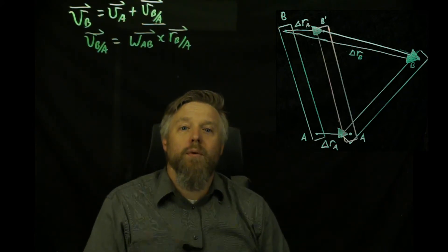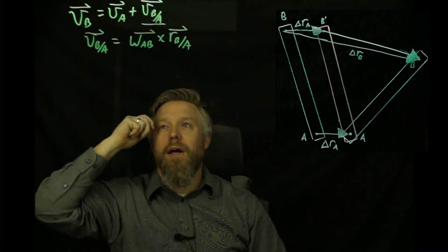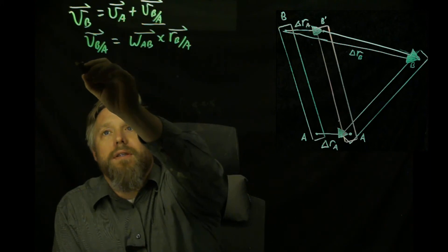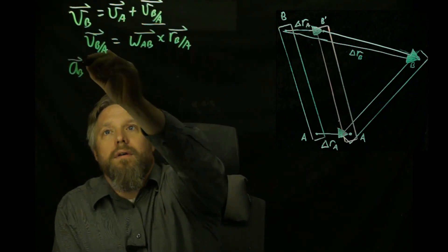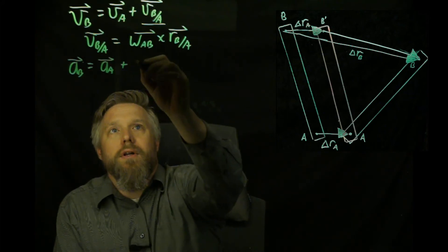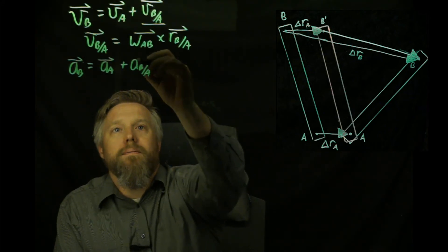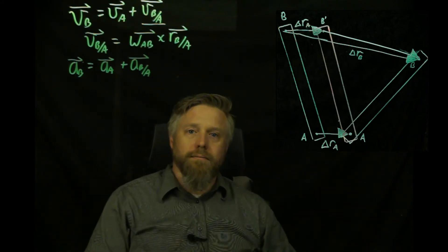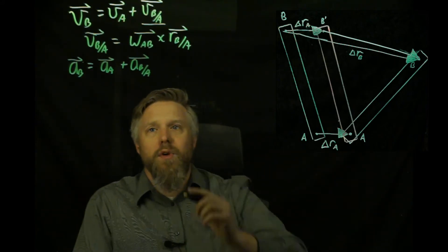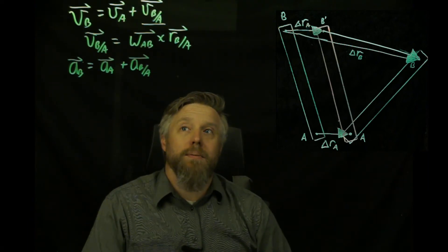Keeping those in mind, we're going to go ahead and take the derivative of our first equation — the derivative of the velocity of b equation. Taking the derivative of the first term, we get the acceleration of b. And that's going to be equal to the acceleration of a, plus the relative acceleration of b with respect to a.